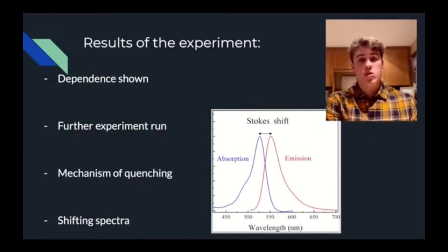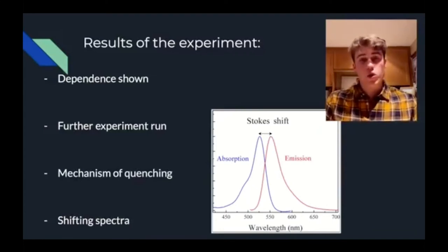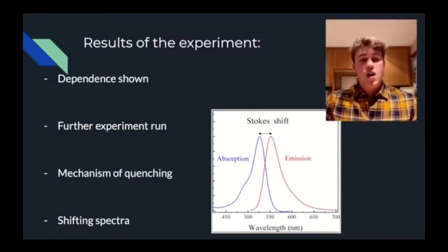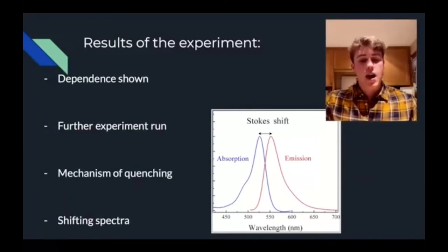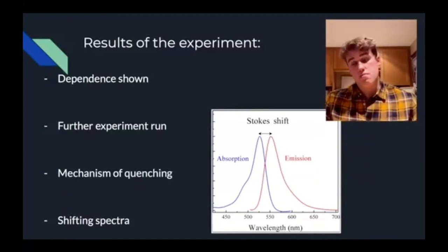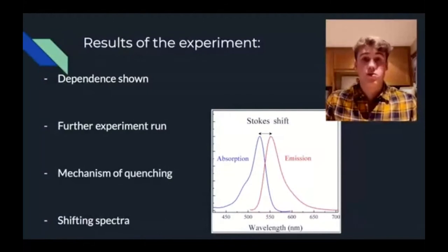One theory was dynamic quenching, whereby when temperature increases, excited state molecules are more likely to dissipate their energy through collisions with other molecules. However, I found a major flaw in the spectrometer: I wasn't able to get full spectra of emission and absorption, only testing at one wavelength for emission and absorbance intensities. This meant that if the temperature dependency was causing the spectra to shift left or right in terms of wavelength, I wouldn't be able to see this. So I couldn't say for certain what mechanism was causing the temperature dependence I had proved.